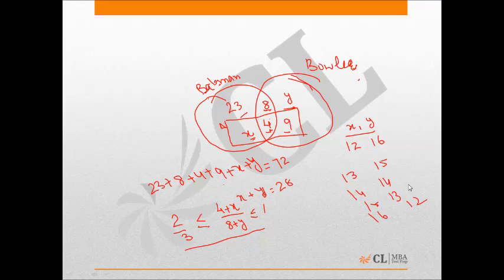So the value of batsmen in category A can never be 15, and that's why option A is the correct answer for this.